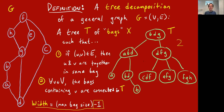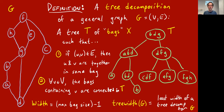The width of this tree decomposition is two because the maximum bag size is three. Generally you're hoping to find a tree decomposition where the bags are as small as possible. The smallest possible width is one because the smallest possible bag size is two — since for every edge, the edge has to appear together in one bag. The tree width of a graph G is defined to be the least possible width of a tree decomposition for G. This graph has tree width two.